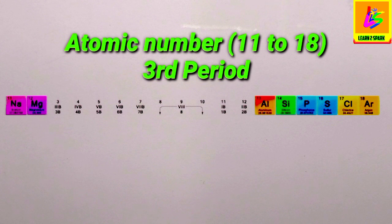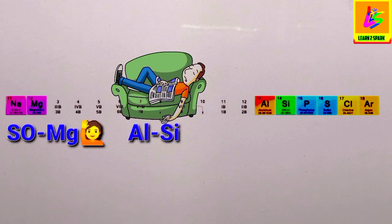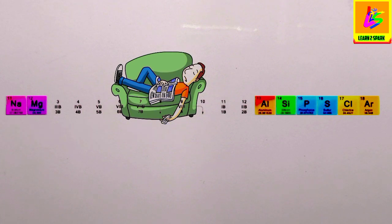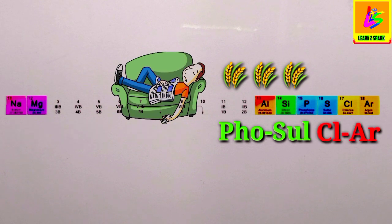Now let's get on to the third period elements from atomic number 11 to 18. Here, Somag ek aalsi ladka. His father told him to watch out the crops to keep away the thieves. Magar wo sota raha ar uska sara fasal khet ka chori ho gya ar clear ho gya.